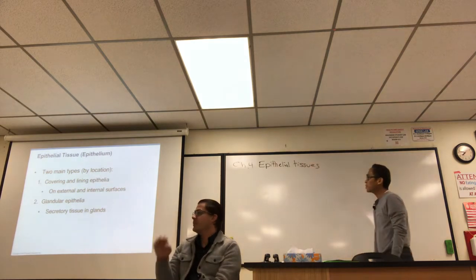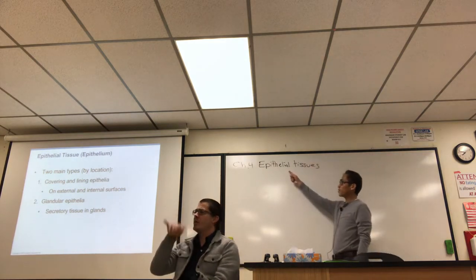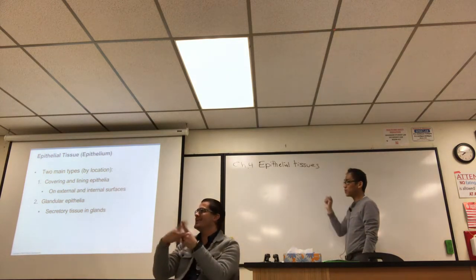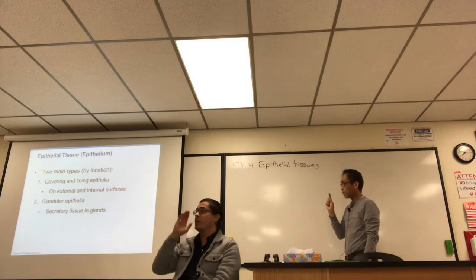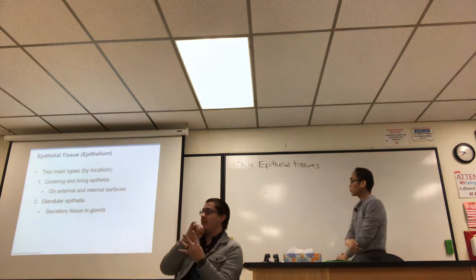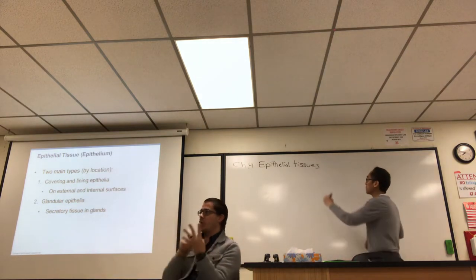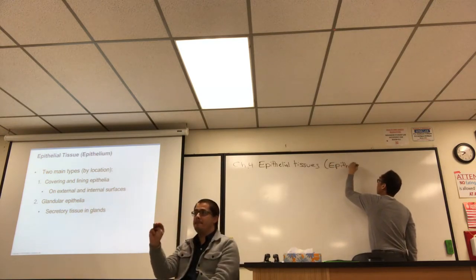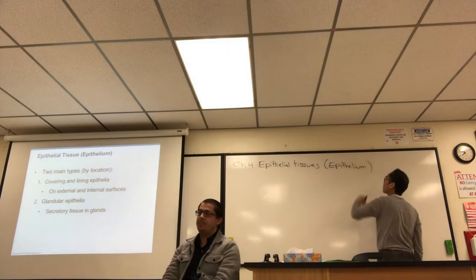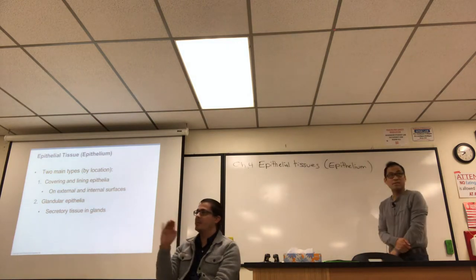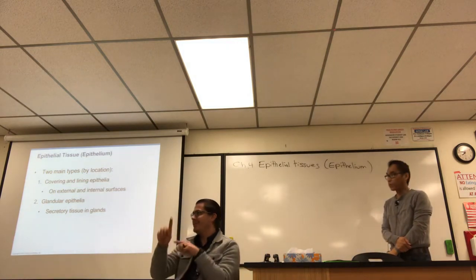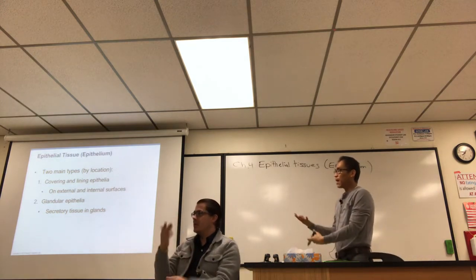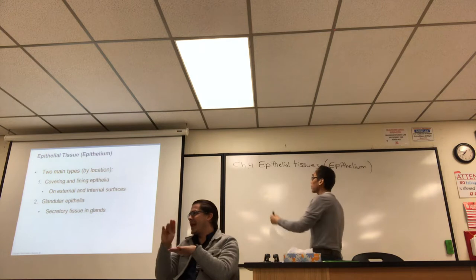Epithelial tissues — the word 'epithelial' is an adjective describing one of the four tissue types: epithelial, connective, muscle, or nervous. The term 'epithelium' is just a different form of the same word. The functions of epithelial tissue are coverings, linings, and glandular functions.